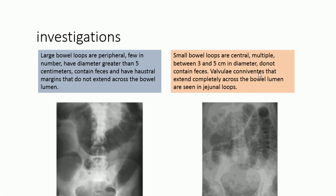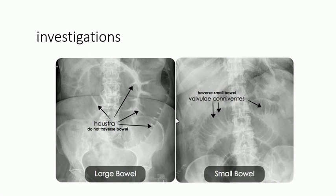There is something called valvulae conniventes — these are slightly opaque lines that extend across the bowel lumen, seen in jejunal loops. In large bowel, you have haustra — they start and end without transversing the whole bowel. In small bowel, valvulae conniventes extend across the entire bowel lumen. This is the key differentiating feature between large and small bowel on X-ray.